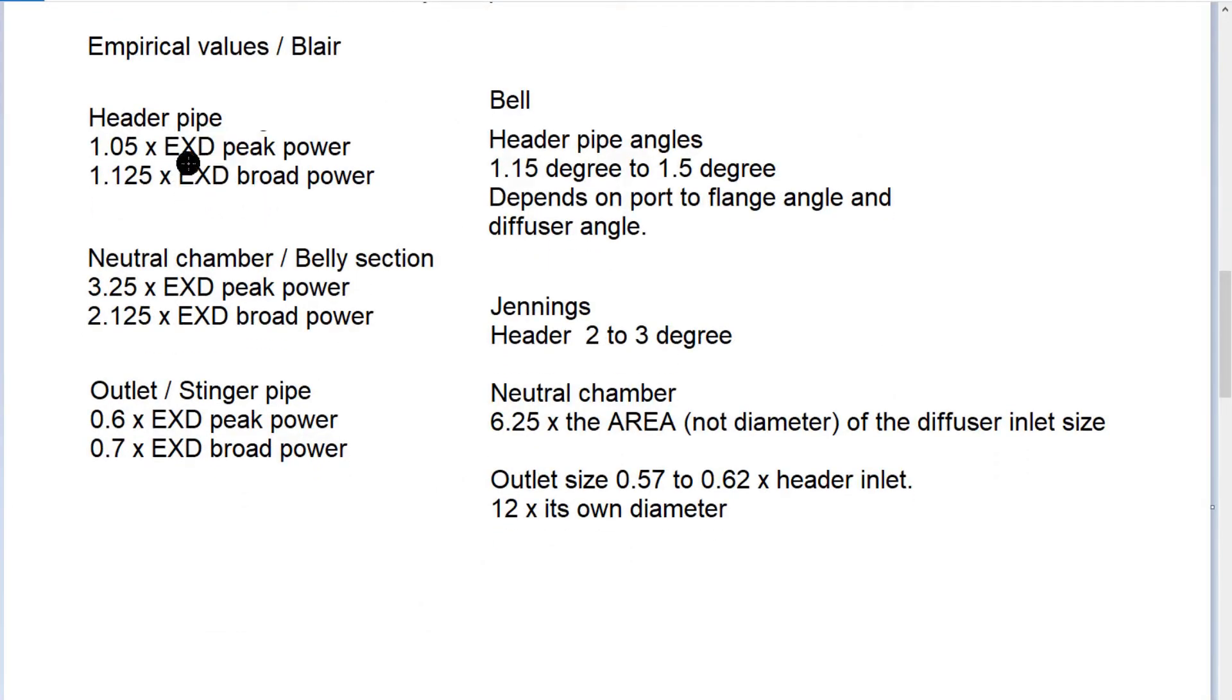Numbers for those given by Blair: header pipe, that's the diameter factor, so that's between the exhaust port diameter which is exhaust port area converted into a round diameter figure. Neutral chamber ratio between the diameter, that's the multiplication factor. Broad power 0.6 times, outlet 0.7 times broader power.